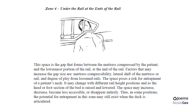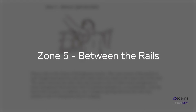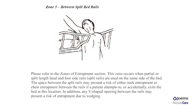Zone 4 is another zone with a high fail rate. Zone 5 – Between Split Bed Rails. This zone occurs when partial or split length head and foot side rails are used on the same side of the bed. The space between the split rails may present a risk of either neck entrapment or chest entrapment if a patient attempts to, or accidentally, exits the bed at this location. In addition, any V-shaped opening between the rails may present a risk of entrapment due to wedging.